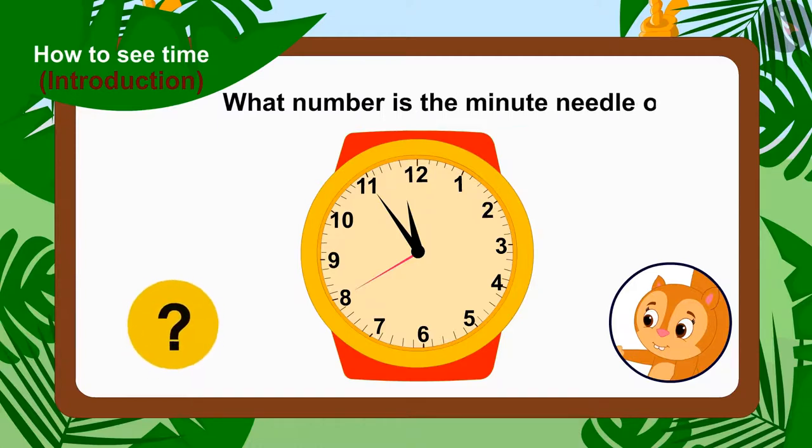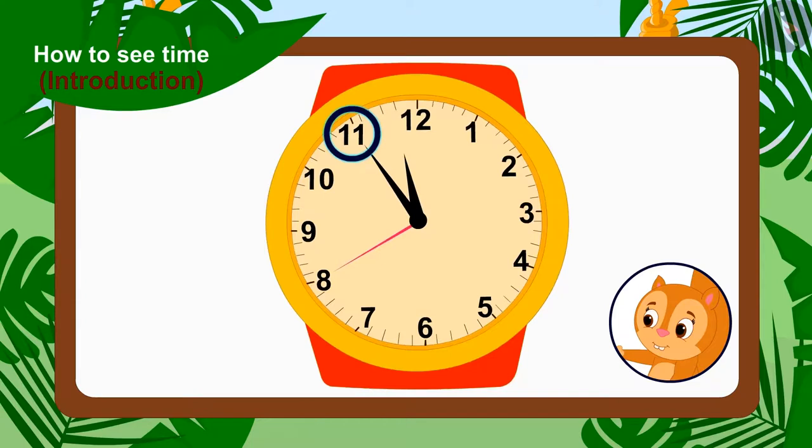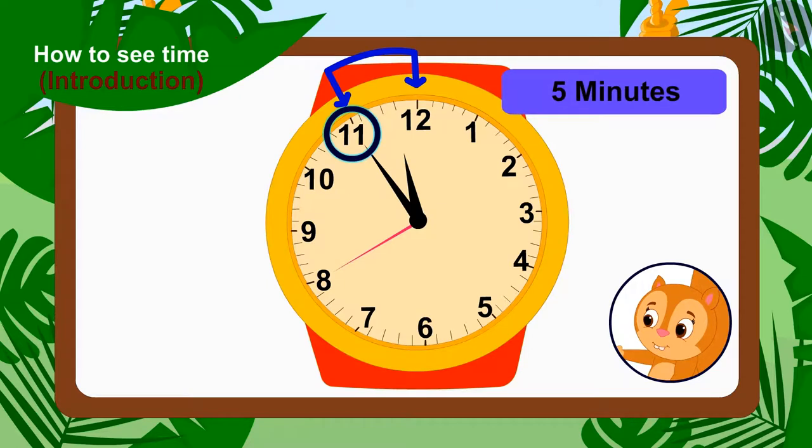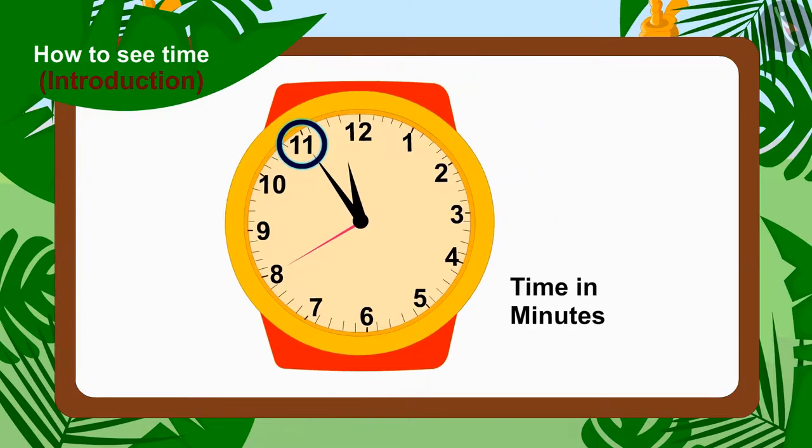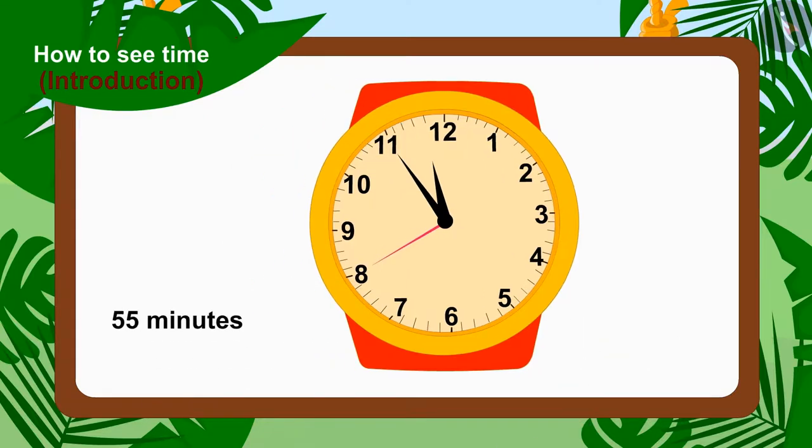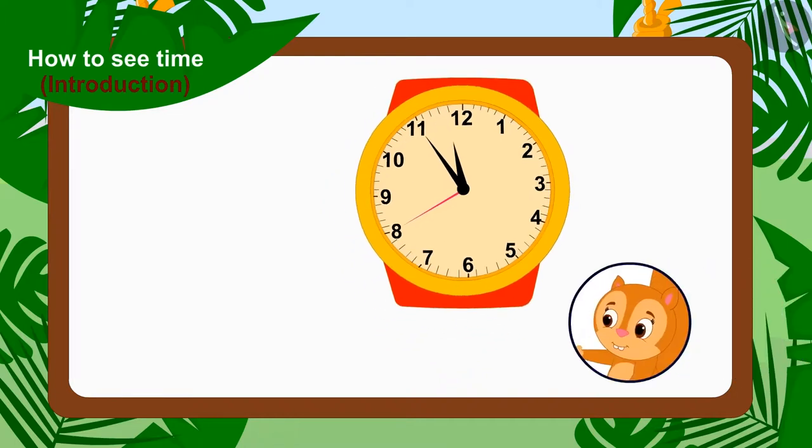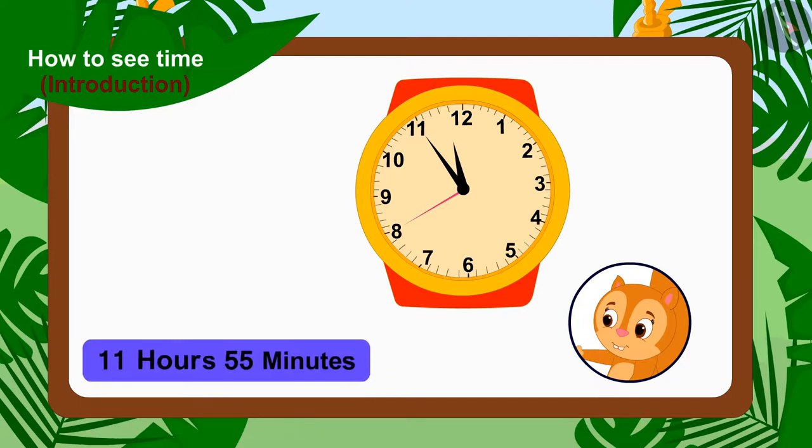Now let's see the time in minutes. Can you tell what number the minute needle is on? 11, on number 11. And we know that there is a distance of 5 minutes between every two numbers. So to count the time in minutes, we have to multiply 11 by 5. So children, what is 11 times 5? 55. In this way, the minute needle is at 55 minutes on Chanda's watch. Now this is very easy. Whenever we want to tell the time on the watch, just call the hour and minute numbers together. In this way, it is 11 hours and 55 minutes on Chanda's watch.